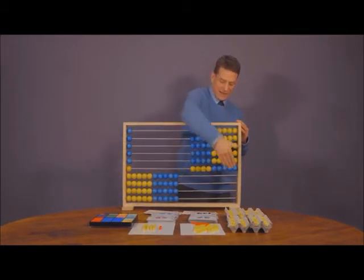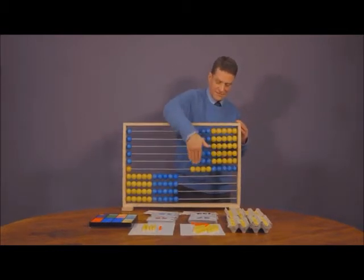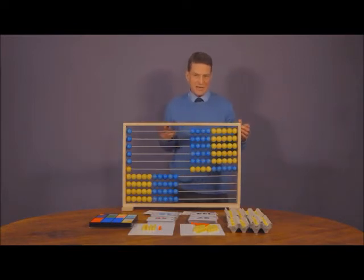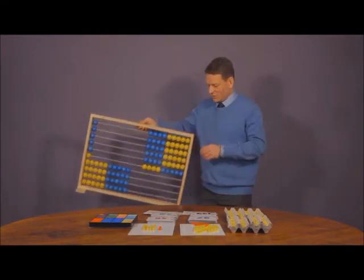So 25 add 20, add five, add four. So 25, 45, 50, 54. So that's the image in the top right hand corner.